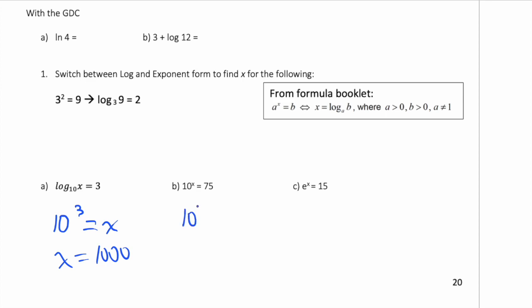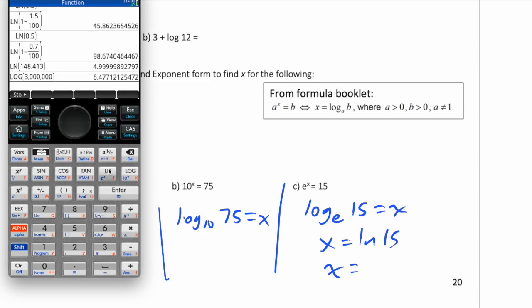And here, the base is 10, so 10 to the power of 75 equals x. So that's a 1 with 75 zeros. Actually, that doesn't make sense. I made a mistake there. Of course, that's a log. So this is an exponent. The inverse is a log. Log base 10 of 75 equals x. So you can get that on your calculator. And here, log base e of 15 equals x. In other words, x equals ln 15. Natural log of 15. So let's get that value. ln 15 is 2.71.